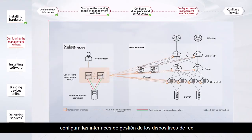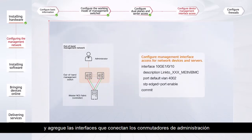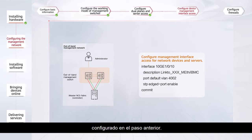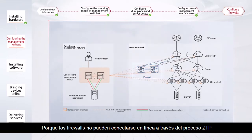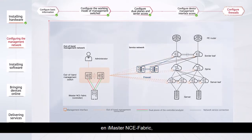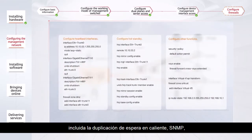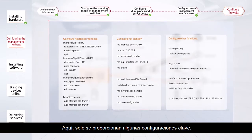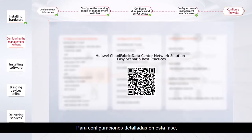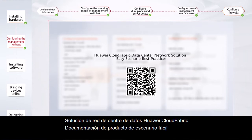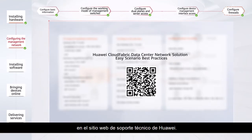Finally, configure the management interfaces of the network devices and servers to connect to the management switches, and add the interfaces connecting the management switches with the management interfaces to the southbound network plane VLAN configured in the previous step. Because firewalls cannot go online through the ZTP process on iMaster NCE Fabric, you need to manually pre-configure the underlay network, including hot standby mirroring, SNMP, NETCONF, and LLDP configurations. Only some key configurations are provided here. For detailed configurations, refer to the Huawei CloudFabric Data Center Network Solution Easy Scenario product documentation on the Huawei Technical Support website.